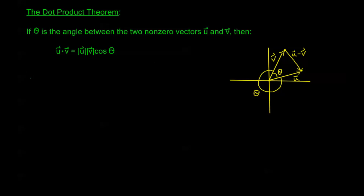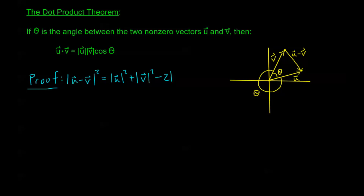We prove this theorem using the law of cosines. We have a triangle, and we can apply law of cosines with the side opposite theta on the left. So the magnitude of u minus v squared equals the magnitude of u squared plus the magnitude of v squared minus 2 times the magnitude of u times the magnitude of v times cosine theta.